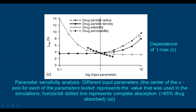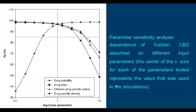Comparing all four parameters — particle size, density, solubility, and permeability — for time to reach maximum drug absorption: drug particle size has the highest effect, followed by density, then solubility, and permeability. For bioavailability: drug solubility has more effect than drug dose and effective drug particle size. Solubility has more effect on bioavailability than particle size density combined.